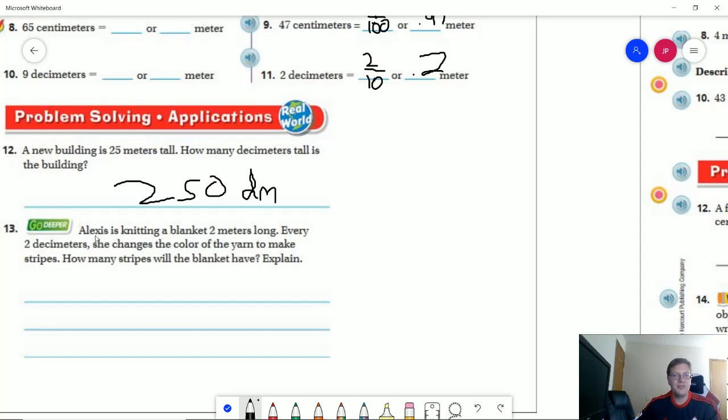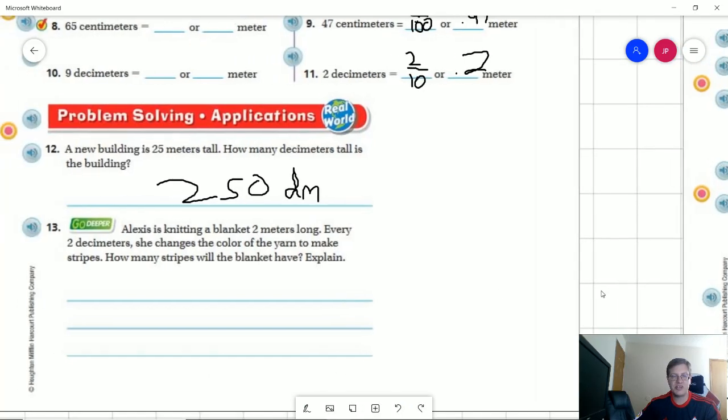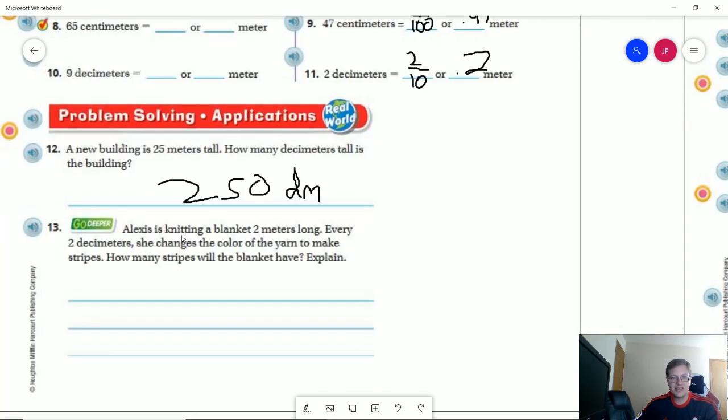So number 13, I'll do this one real quick, even though this isn't one of the ones that was assigned for my Risen Christ students. Alexis is knitting a blanket that's two meters long. Every two decimeters, she changes the shape of the color to make stripes. How many stripes will we have? So a decimeter is one tenth of a meter. So if I have two meters, then I'm going to have 20 decimeters. And so I will change technically 19 times.